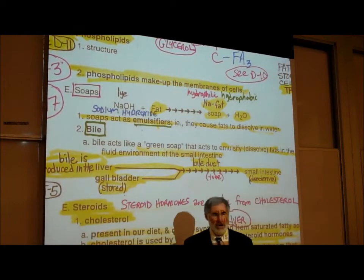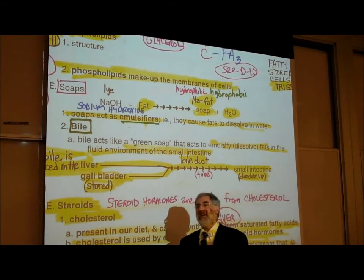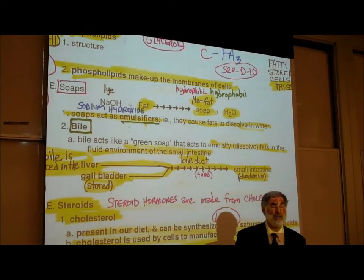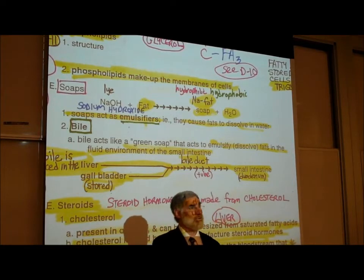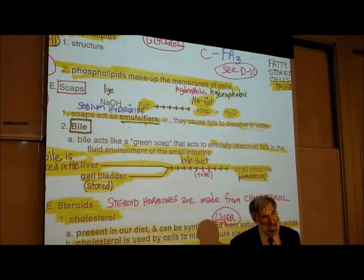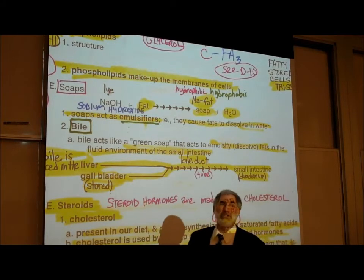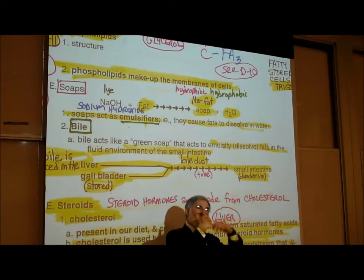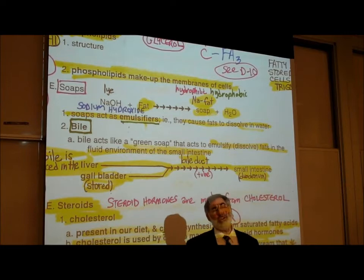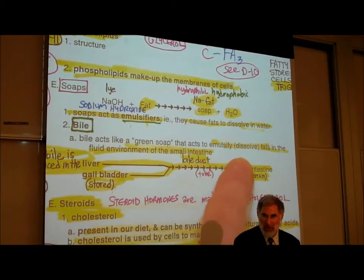Why would our body make soap? To emulsify the fats that we ingest. Any time you eat foods containing fat — butter, margarine, the fat in meat, vegetable oils — fats will not naturally dissolve in water on their own. And yet we are mostly made out of water — we're 60% water. So how do we get the fats we're swallowing to dissolve in the watery environment of our body, in our intestinal tract? We need soap, and we call this soap bile. The purpose of bile is to allow the fats in our food to dissolve or be emulsified in our small intestine.